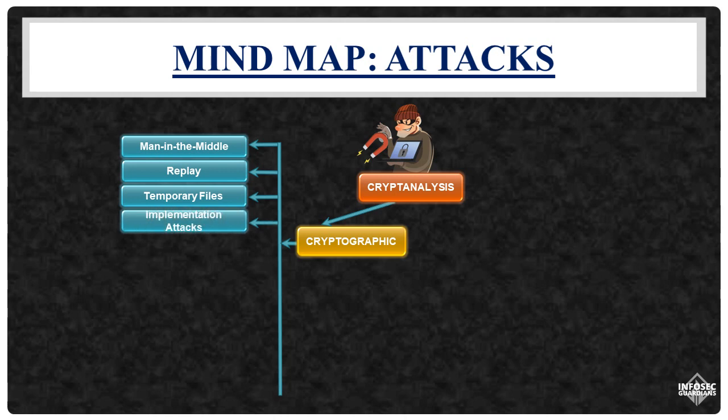Implementation attacks target weaknesses in how algorithms, cryptosystems, protocols, or applications are implemented. A notable example is the Wired Equivalent Privacy (WEP) protocol, which poorly implements the RC4 encryption algorithm, making it insecure.